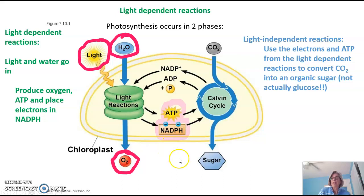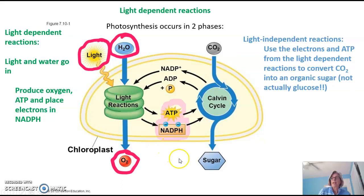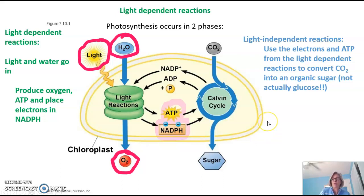In the light-independent or Calvin cycle reactions, the electrons and ATP made in the light-dependent reactions are used to convert CO2 into an organic sugar. But this is not actually glucose that is produced — that's a very important point to know. Another video on this channel covers the light-independent or Calvin cycle reactions. This video is going to focus on the details of the light-dependent reactions.